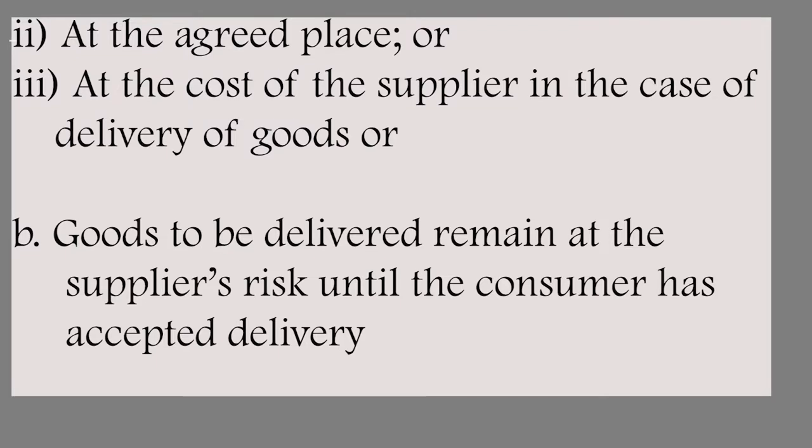Goods to be delivered remain at the supplier's risk until the consumer has accepted delivery. This brings us to the passage of risk. The common law position has been that risk for the goods passes to the consumer as soon as the contract is perfected. The CPA extends this, saying that at no point does the risk pass to the consumer as long as the consumer has not received the goods. In the past, the risk would attach to the supplier only before the contract was perfected, or where there was a suspensive contract term.